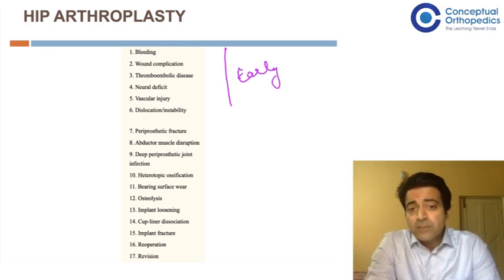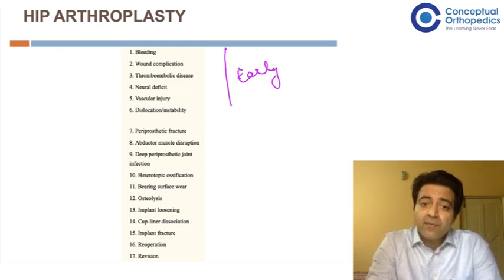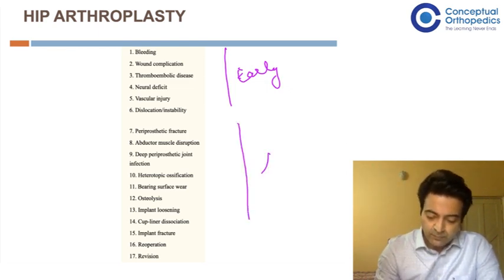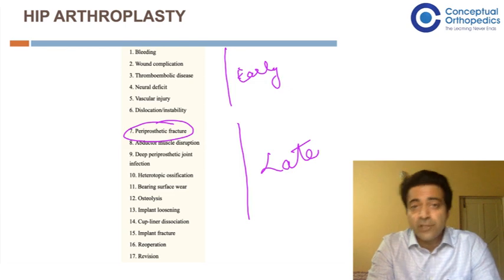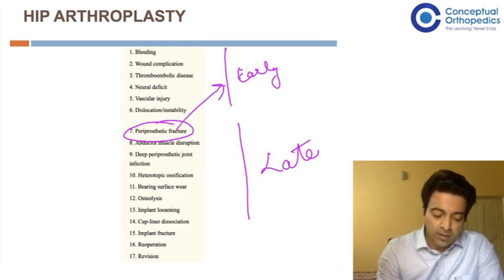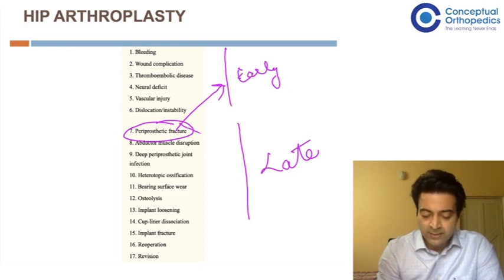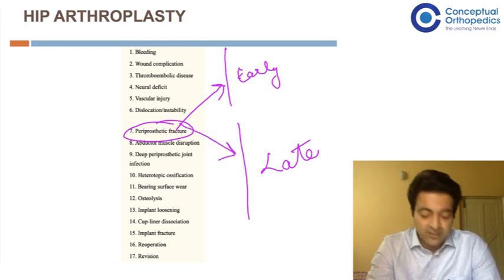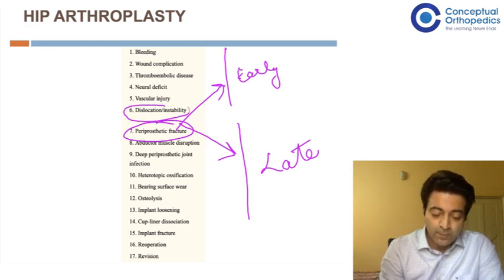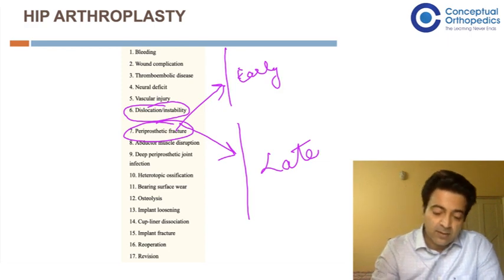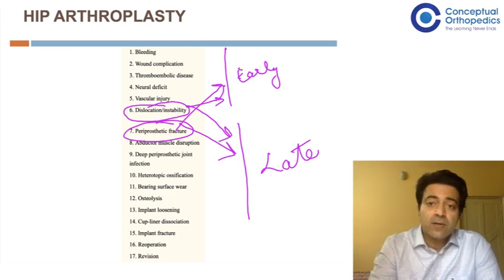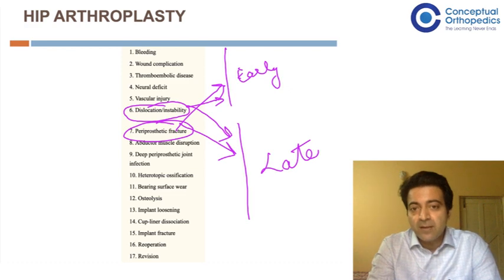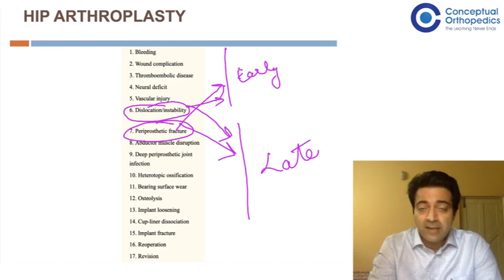Periprosthetic fractures, abductor muscle dysfunction, heterotopic ossification, osteolysis, and loosening all come under late complications. However, there could be some overlap. Periprosthetic fractures can occur intraoperatively and become early, or after a fall and become late. Similarly, dislocation is mostly an early complication, but can also occur many years after the index surgery as a result of wear or impingement, making it a late cause.